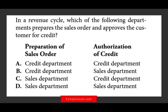Let's take a look at this revenue cycle question. Which of the following departments prepares the sales order and approves the customer for credit? Which department prepares the sales order? It's the sales department, so you can immediately eliminate options A and B.